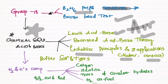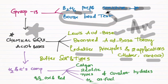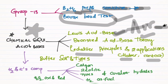Next important is Group 13, then chemical equilibrium — it is very easy. Important topics include Lewis Acid-Base Theory, Brønsted Acid-Base Theory, and Arrhenius theory. Le Chatelier's principle and its applications — Haber process, Contact process, effect of temperature, concentration, and pressure — are likely to be chosen. Buffer solutions and their types are also important.